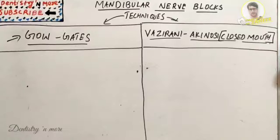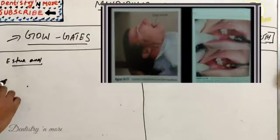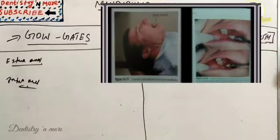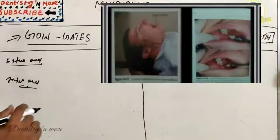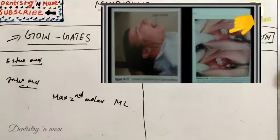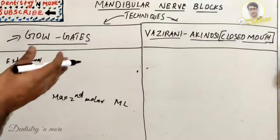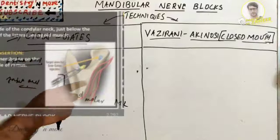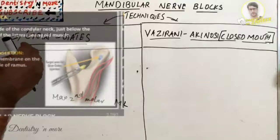The landmarks for Go-Gates technique include extra-oral landmarks: the lower border of the tragus and the corner of the mouth. Intra-orally, the height of injection is established by placement of the needle tip below the mesiopalatal cusp of the maxillary second molar. The penetration is just distal to the maxillary second molar. The target area is the lateral side of the condylar neck just below the insertion of the lateral pterygoid muscle.